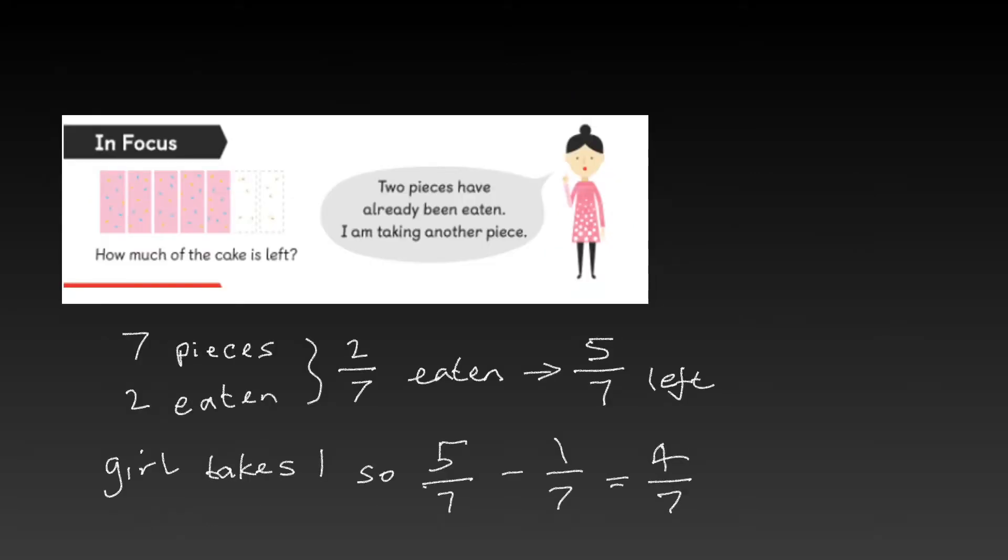In the in-focus task there is some cake. The question asks how much of the cake is left. Before we work out how much is left we need to find out how many parts there are to make a whole. We can see there are 5 pink pieces of cake and 2 white pieces of cake. So 5 add 2 is equal to? That's right, 7.